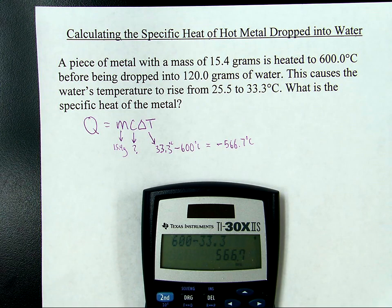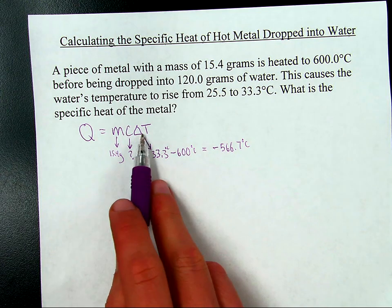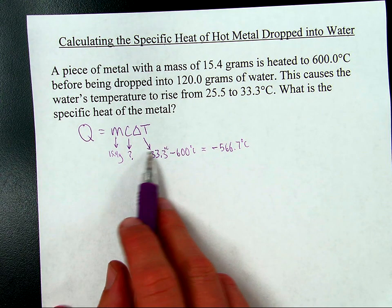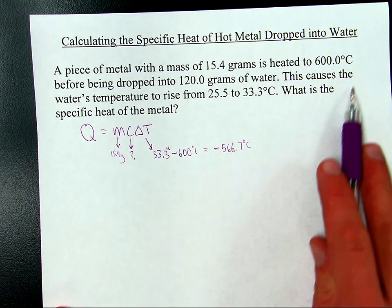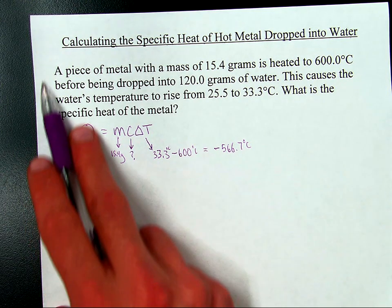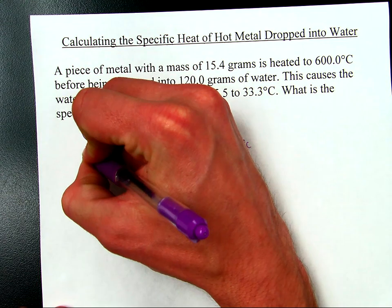Negative 566.7 degrees Celsius is the delta T. What that leaves us with is a situation where we know this, we know this, we do not know this, and the thing is, Q is energy, which means for this to be in here, we'd have to be given something about joules, or calories, or some other energy unit, and no such thing is given, which means unknown.